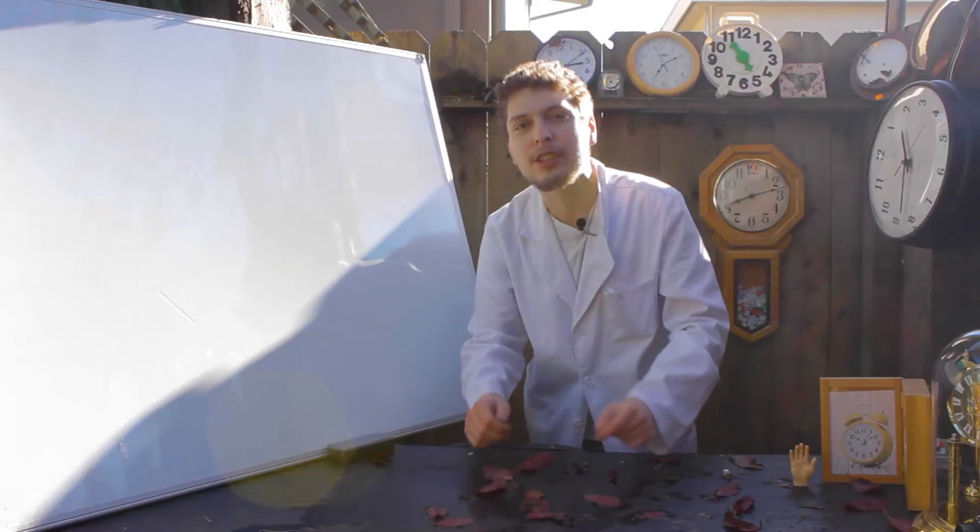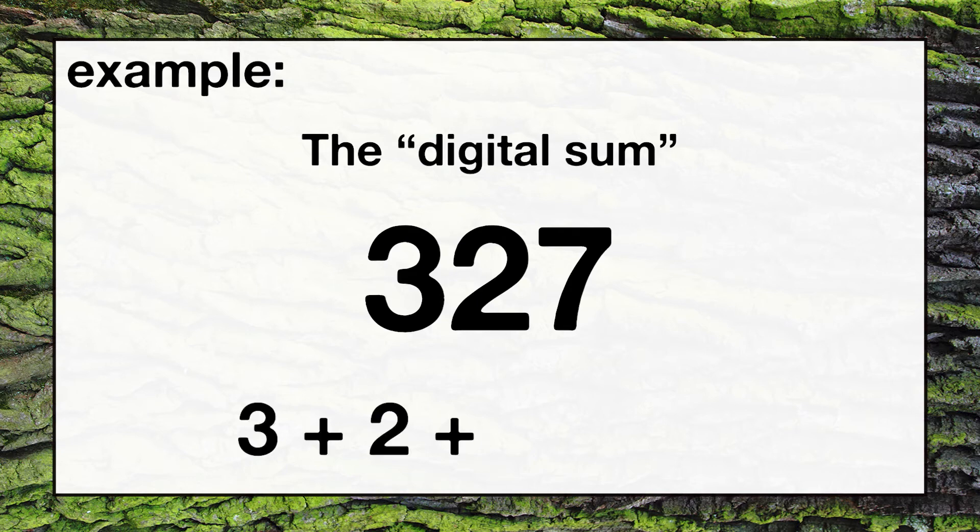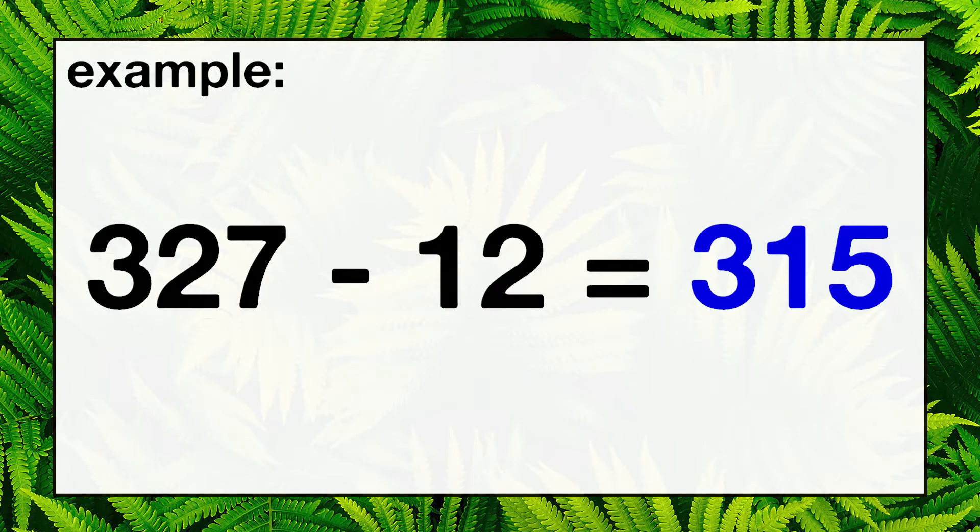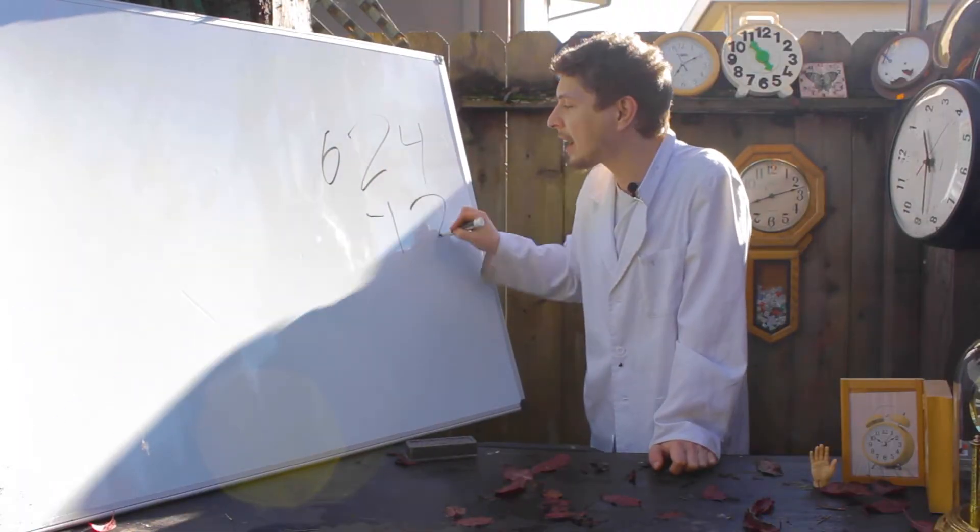I want you to take this starting number and add up all the digits. Now take that result of all the added digits and subtract that from your original number. Let's say you want to pick 624, you add the digits and you're gonna subtract that from your original number. What you're left with is your lucky number.